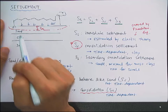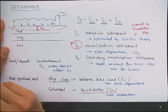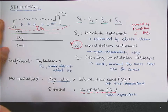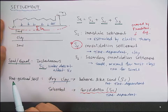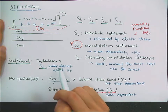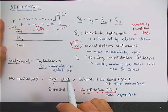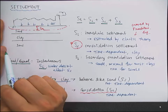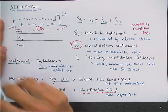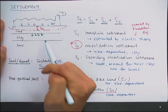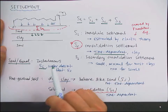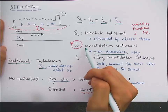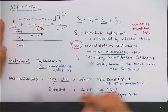In sand, because the permeability is high, as soon as you apply the load, the water will escape, and it's going to cause elastic deformation instantaneously. So in sand and gravel, you have an instantaneous settlement, and the presence of water does not affect the instantaneous settlement. But in clay and fine-grained sediment, because the permeability is low, when you squeeze it down, the water will need time to escape. So time-dependent settlement will occur, with gradually increasing settlement with time. This is called the consolidation settlement.